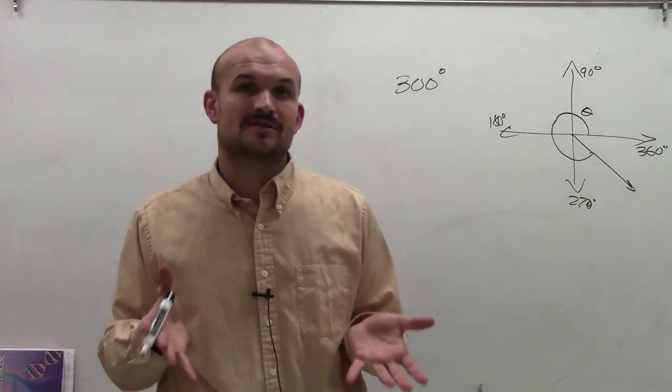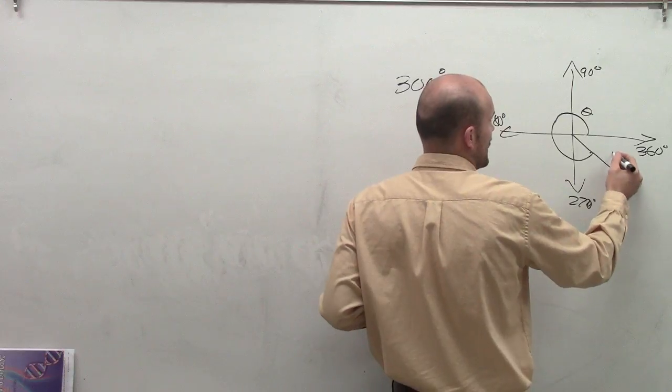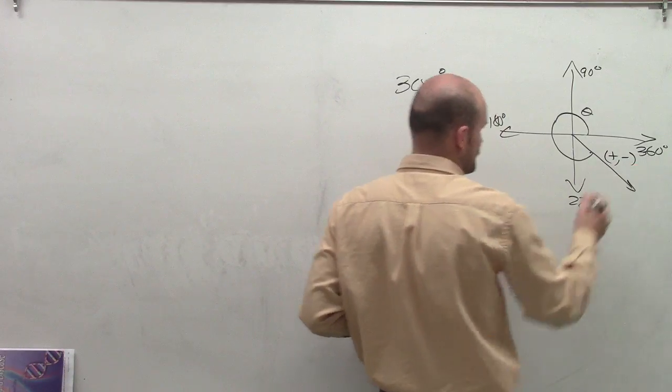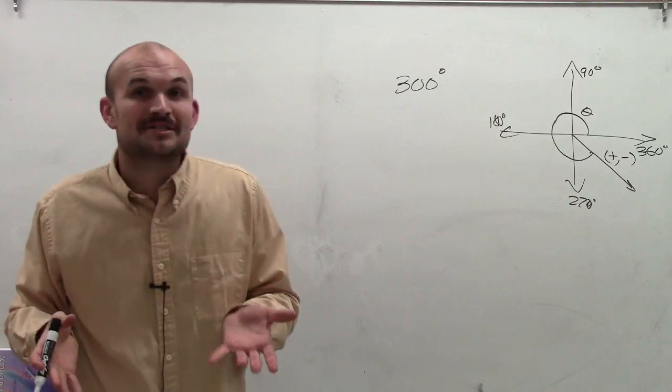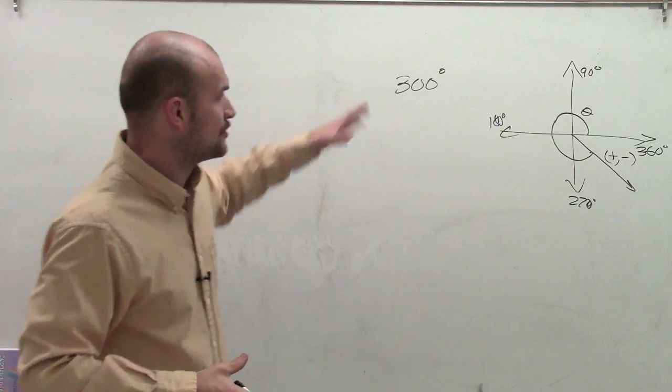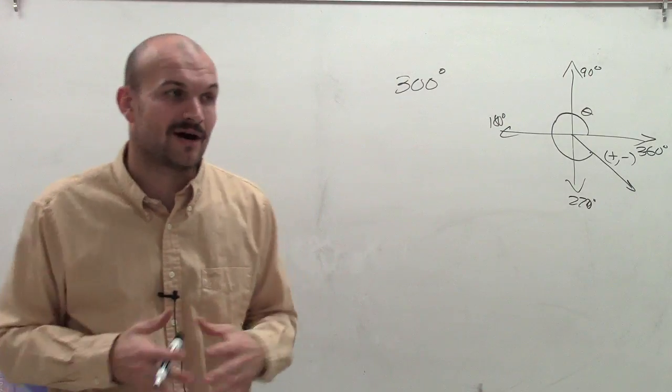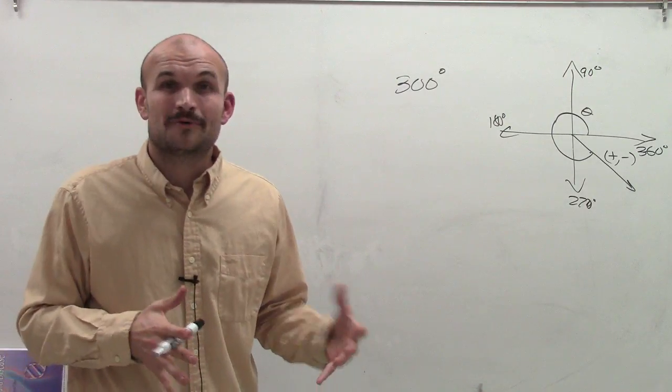And why it's so important for us to know that's in the fourth quadrant is we know that the x value is going to be positive and the y value is going to be negative. Now, the next thing I need to do is determine what is that coordinate point that would be on the unit circle that's going to relate to 300 degrees. If you remember the unit circle, you could probably quickly figure it out. But if you kind of forgot the unit circle...